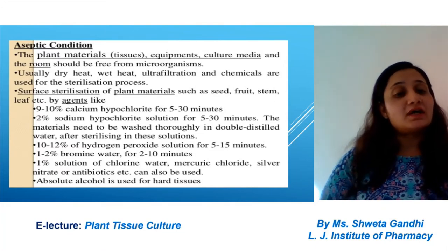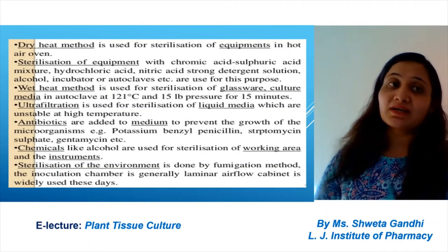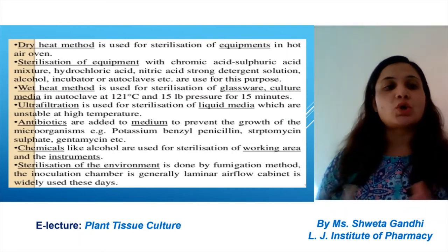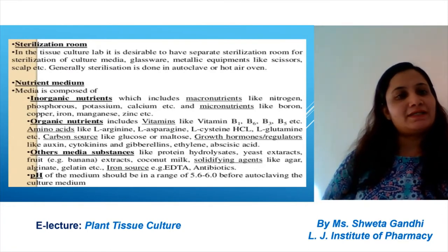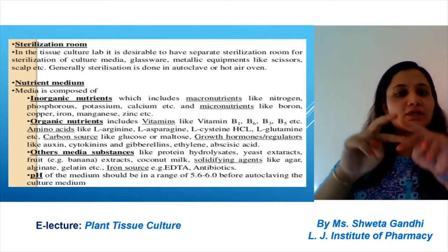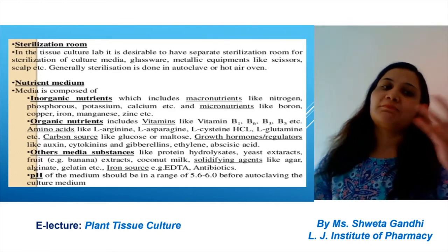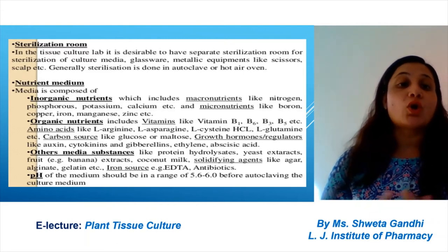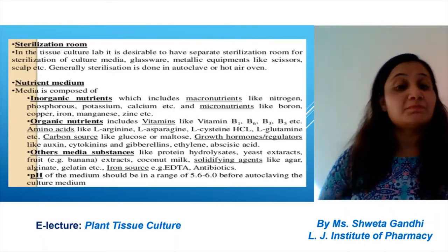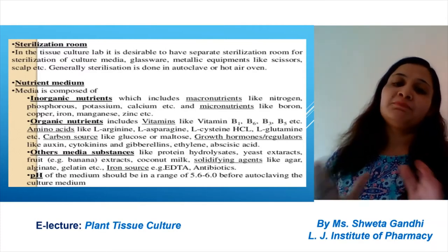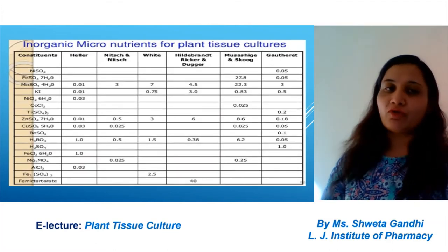Aseptic conditions must be maintained. We can use hot sterilization, steam sterilization, dry heat sterilization, or ultra sterilization. For nutritional requirements: inorganic nutrients are macro (nitrogen, phosphorus, potassium) and micro (copper, magnesium). Organic nutrients include vitamins, plant growth regulators, and other media substances like solidifying agents. pH should be maintained at five to six. Vitamins B1 and B6 can be used in the nutrient medium. Plant growth regulators are also an important part of the nutrient medium.